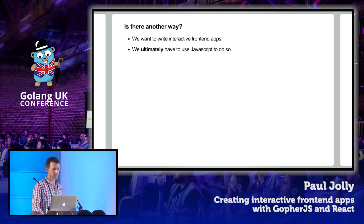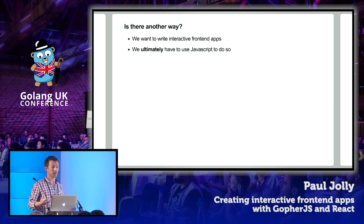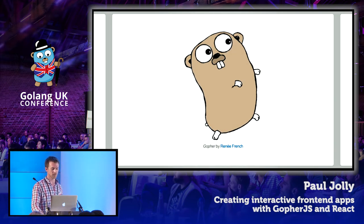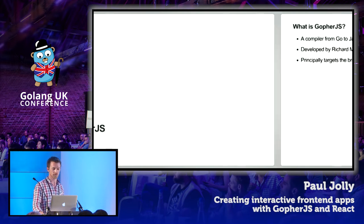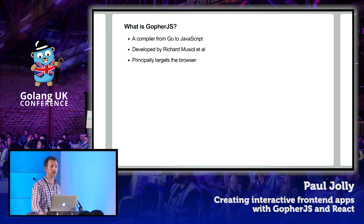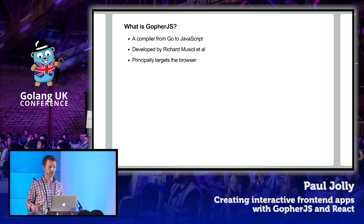Is there another way? Well, Go is the answer to this. But we ultimately have to end up with JavaScript at the end of our pipeline. So this is where GopherJS comes in — it's a compiler that takes Go code and gives us JavaScript. As simple as that. It's an absolutely outstanding project. The target of GopherJS is to give you JavaScript you can then run within the browser, which is a massive tick in terms of what we're trying to do today.